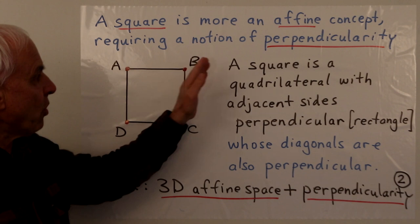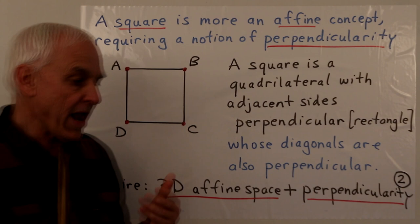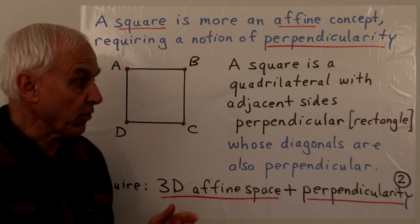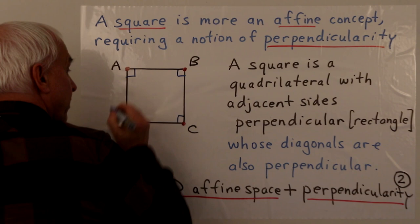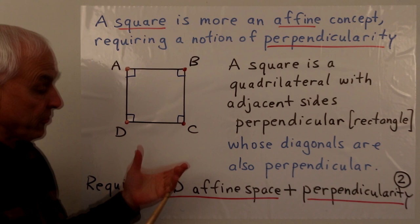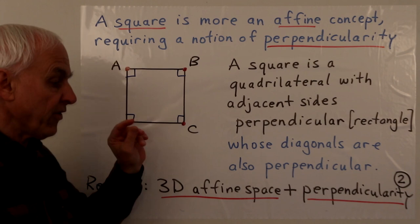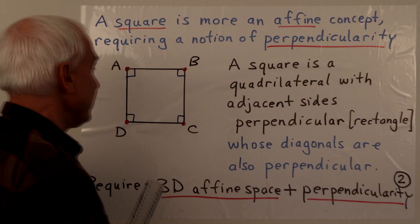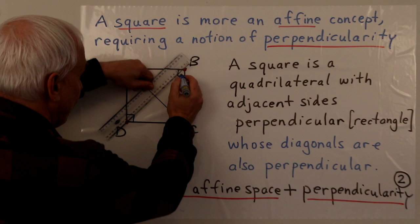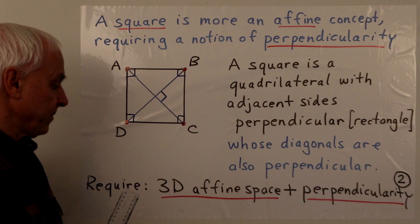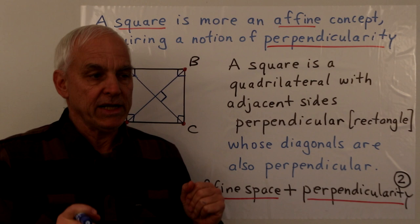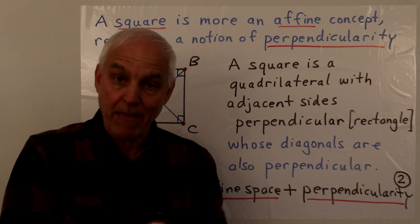The idea of a square really belongs a little bit more to affine geometry than to projective geometry, and implicit in that is a notion of perpendicularity. Here is a square. What actually makes it a square? First of all, it's a quadrilateral with four vertices and four sides, and the adjacent sides are perpendicular — that prescribes a rectangle. What makes it a square is the additional property that the diagonals of this rectangle are also perpendicular.